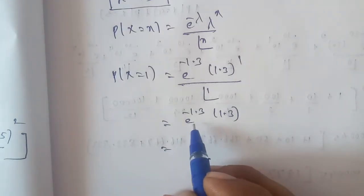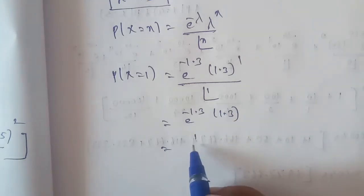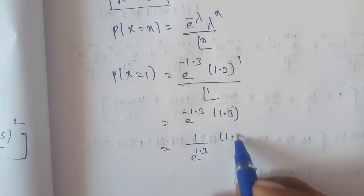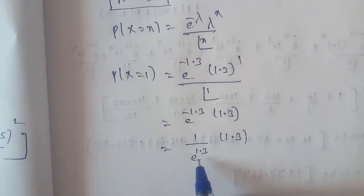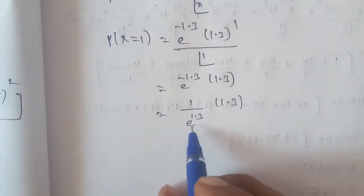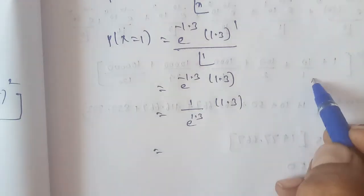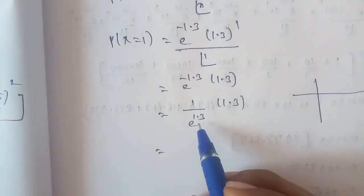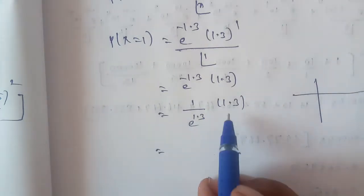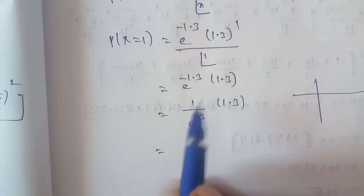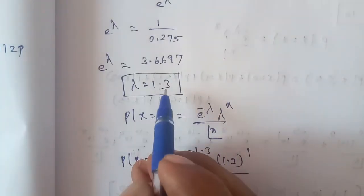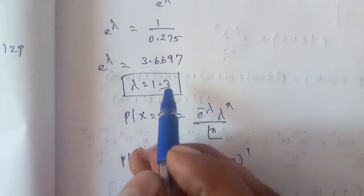From the exponential table, the negative value e power of minus 1.3 equals 1 divided by e power of 1.3. Since e power of 1.3 is 3.6697 from the table, e power of minus 1.3 equals 1 divided by 3.6697.